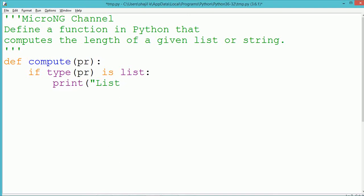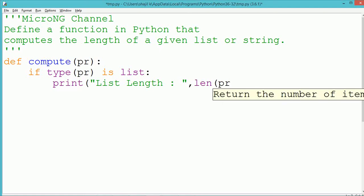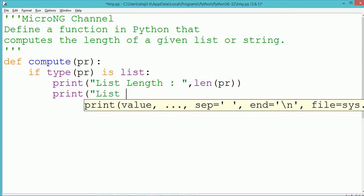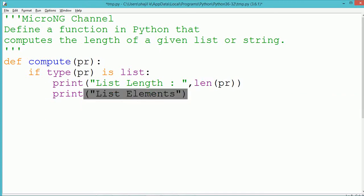By using the type method, we can check what type of data the pr is holding, whether it is an integer, long, float, string, or list. The type of the pr variable can be found by using the type method.